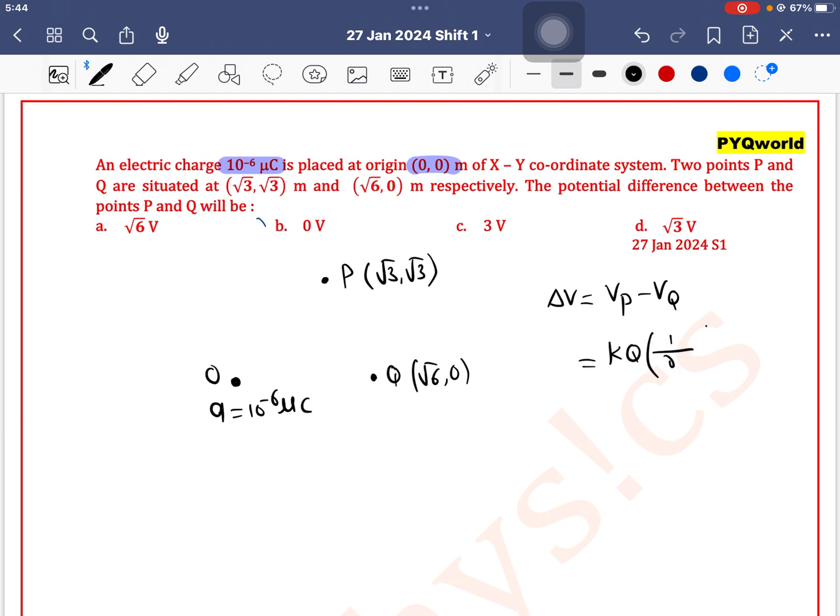This is the distance of point P and this is the distance of point Q. So first we will find the distance of point P.